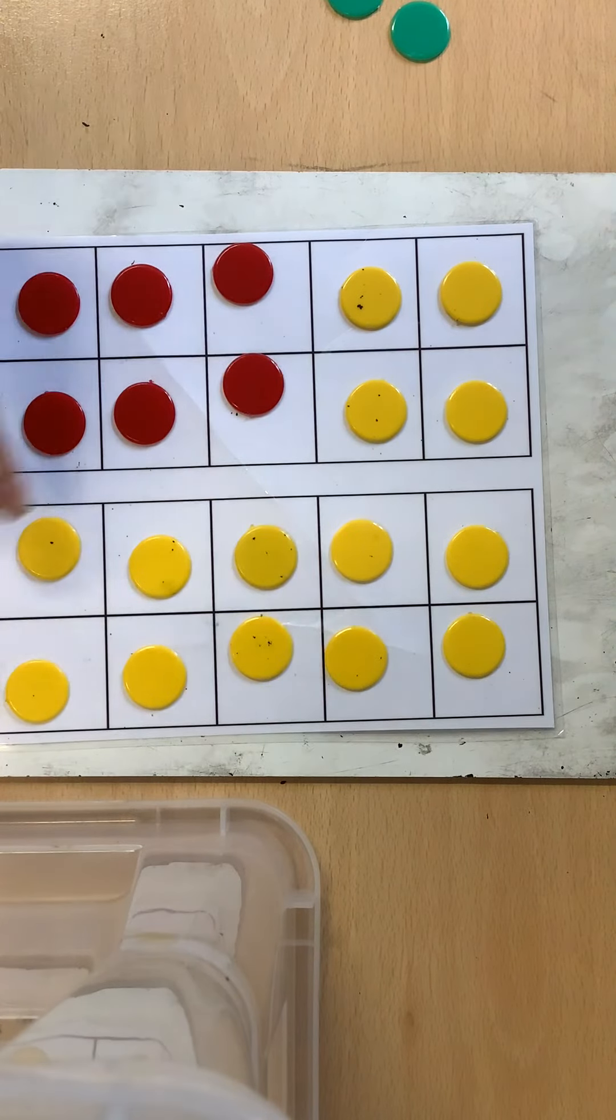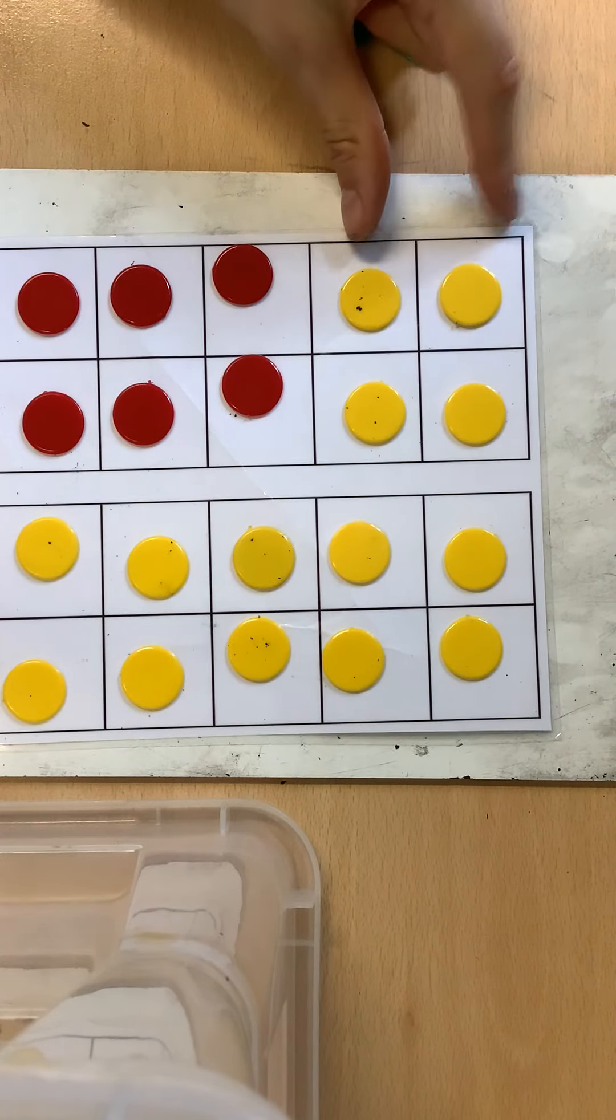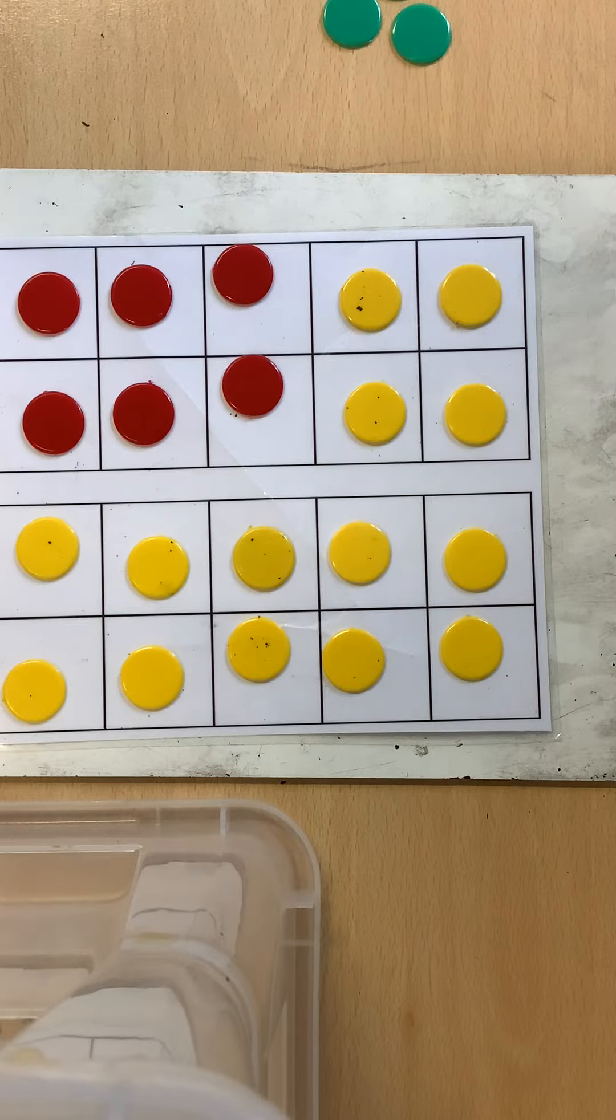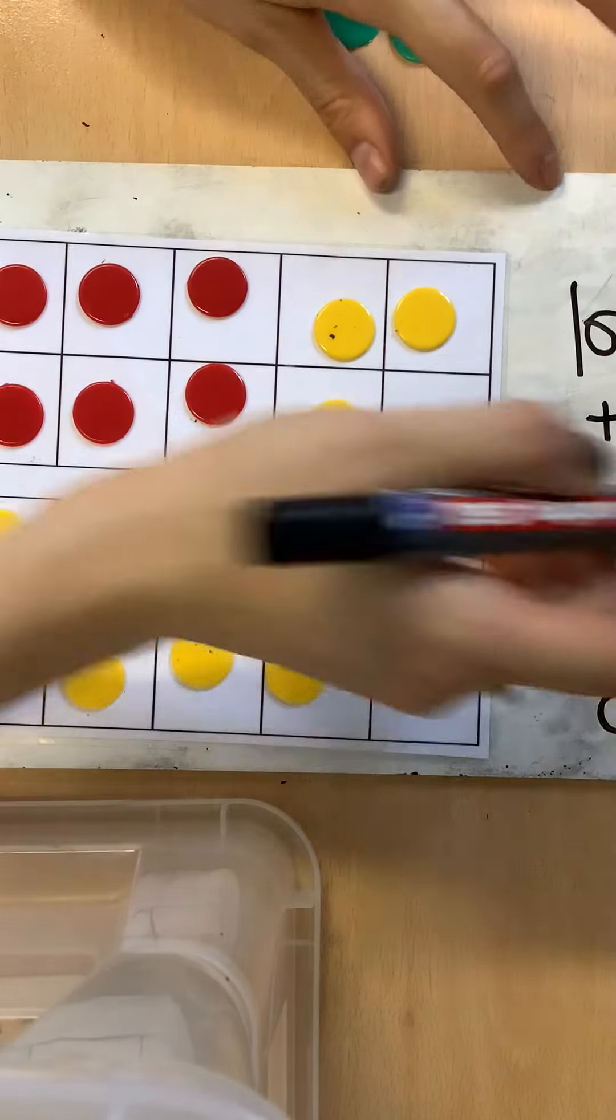So there's 10 there and the four here, 10 and four, 10, 11, 12, 13, 14.